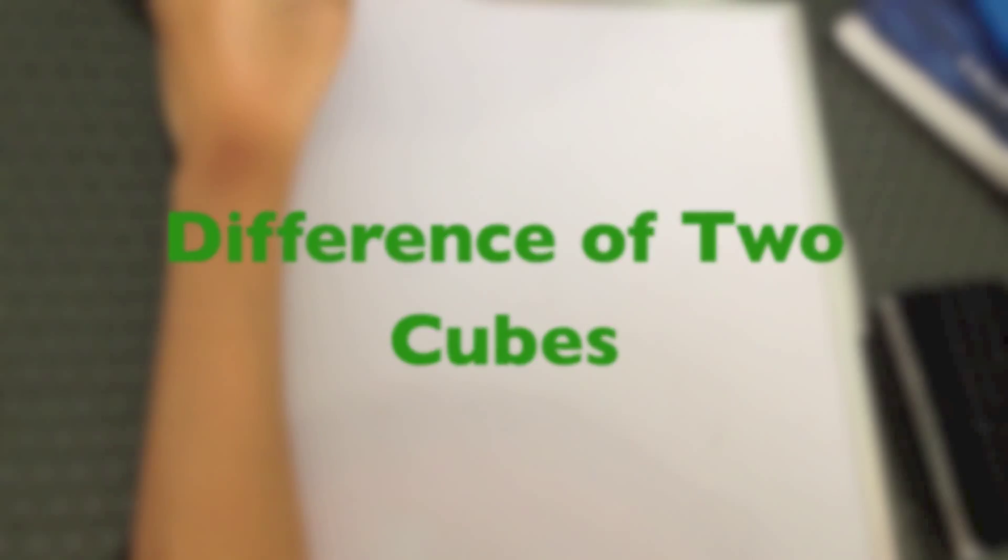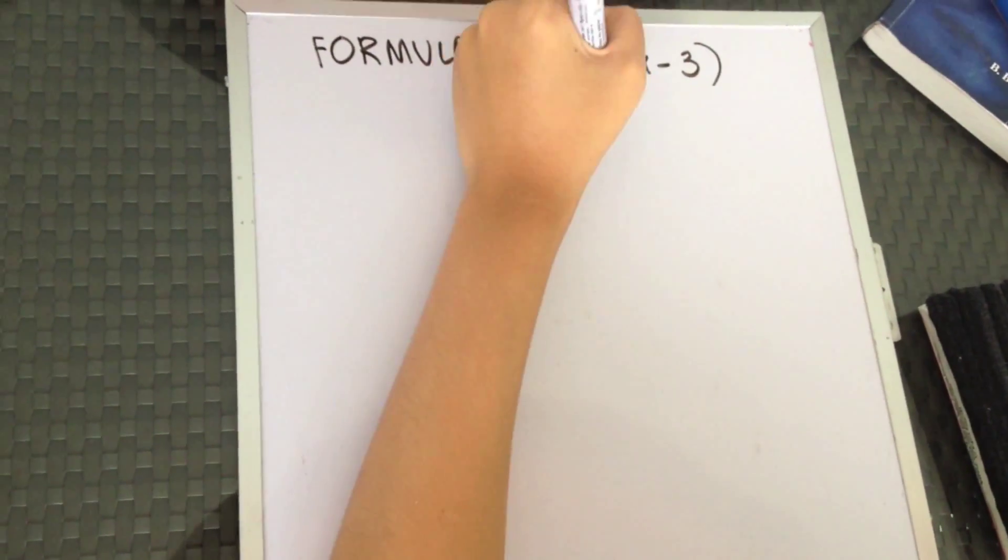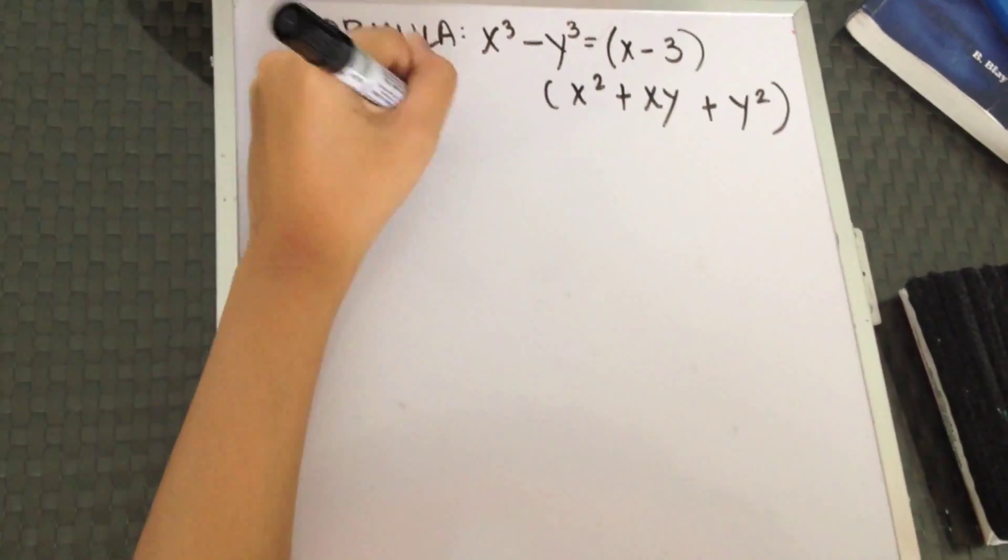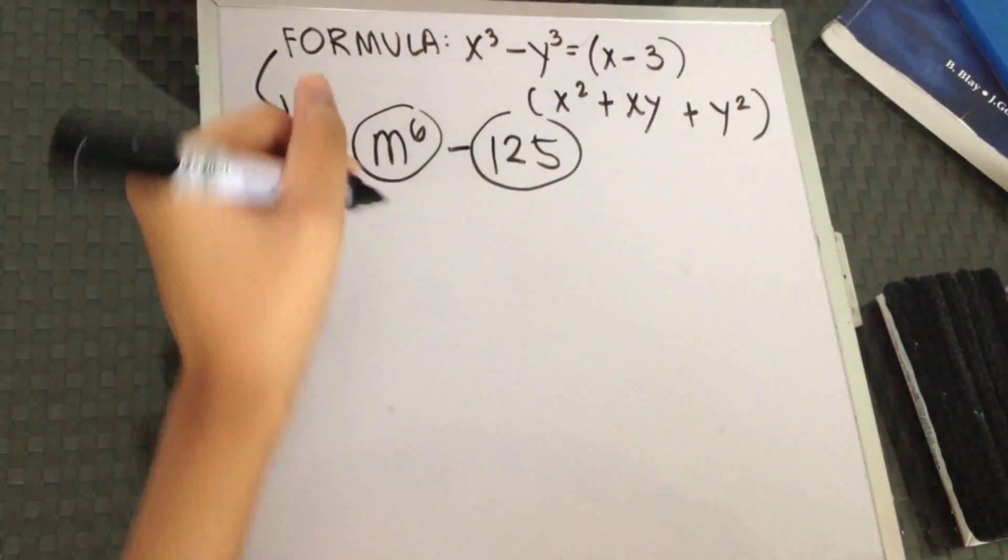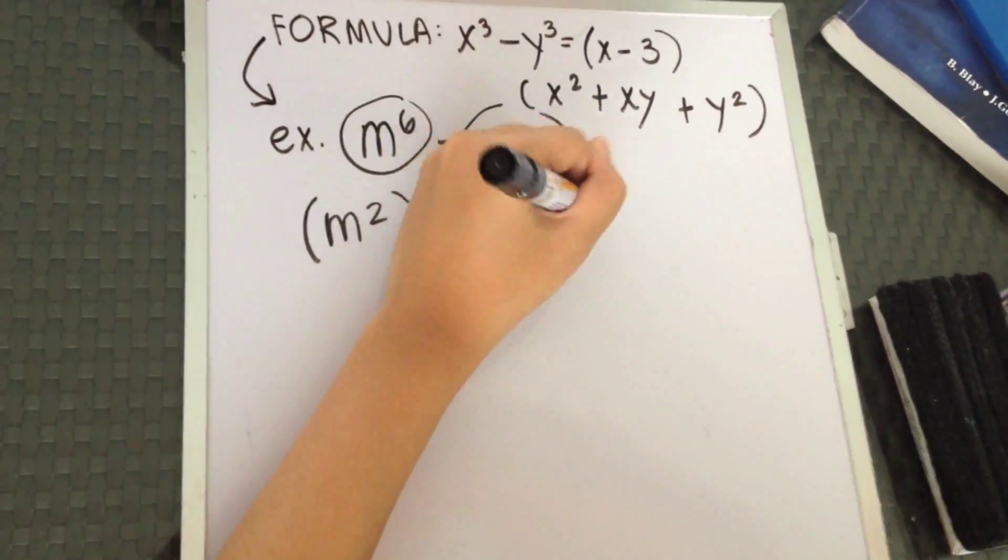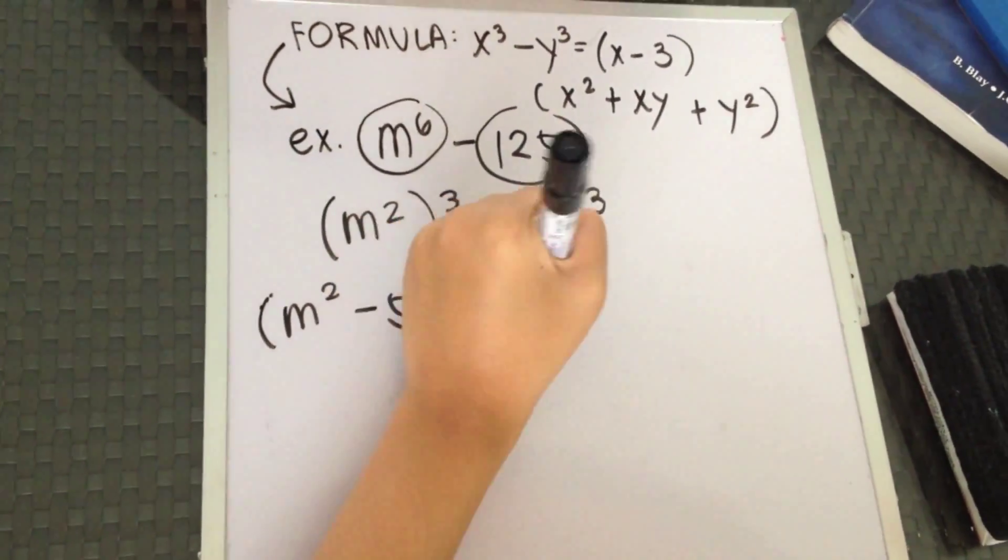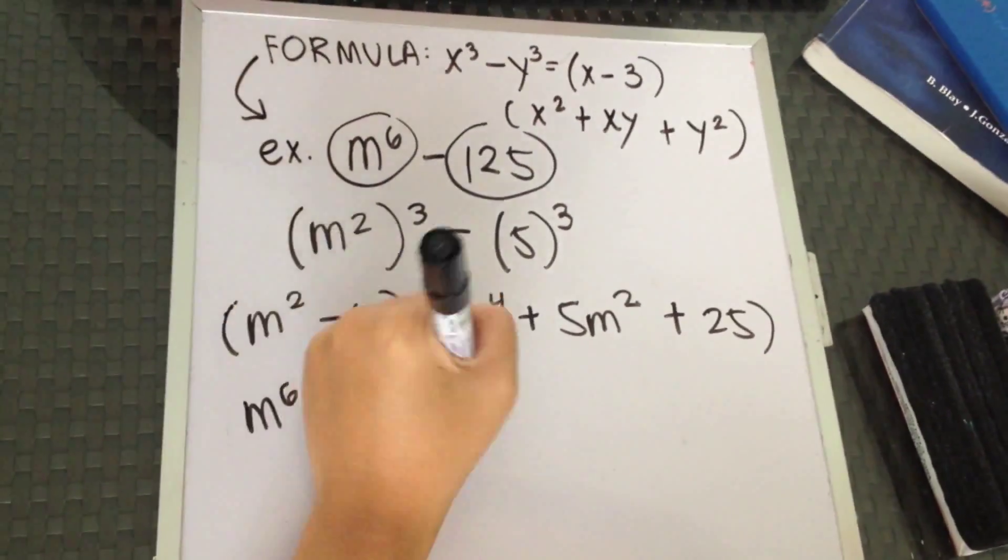Difference of two cubes. The formula is x cubed minus y cubed equals x squared plus xy plus y squared. Get the cube root of n and 125. Apply the formula. This is your final answer.